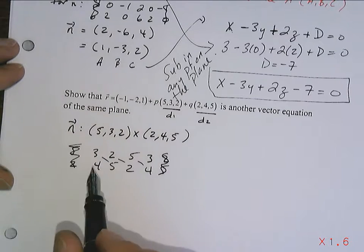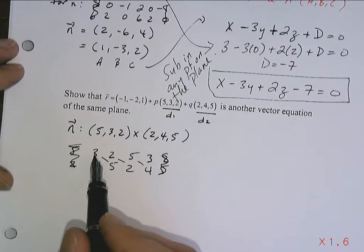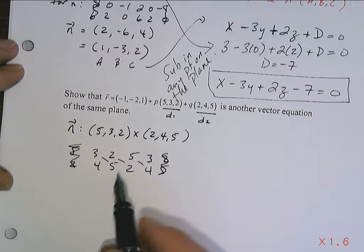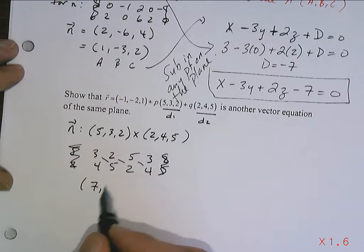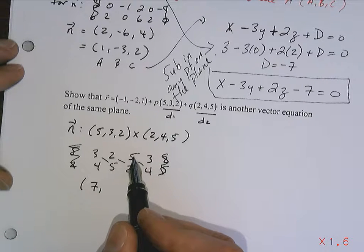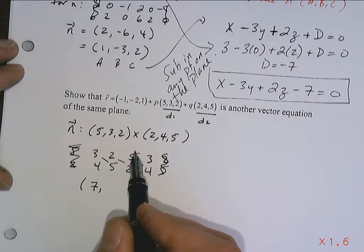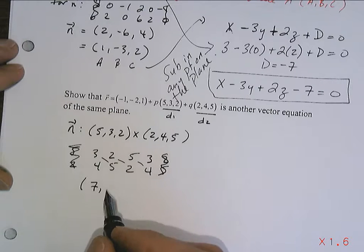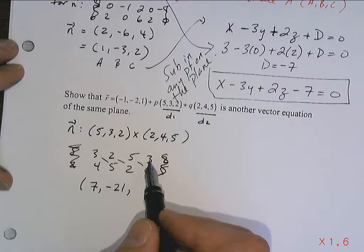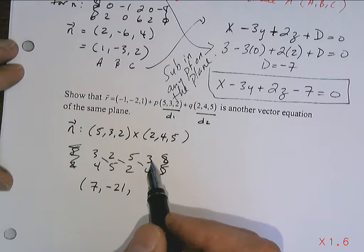Down products. Now this gets a little bit trickier. Keep your wits about you. 15 subtract 8, so that's 7. 4 subtract 25, 4 subtract 25, negative 21. 20 subtract 6, 20 subtract 6, 14.